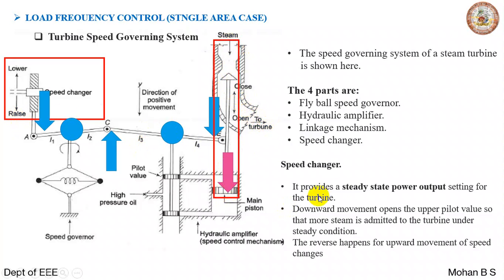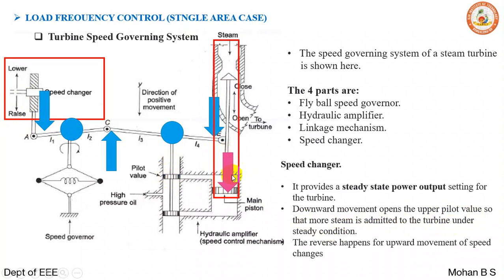The speed changer provides a steady state power output setting for the turbine. Downward movement opens the upper pilot valve so that more steam is admitted to the turbine under steady state. This moves the piston upward and E moves downward due to the high pressure oil entering the chamber. The reverse happens for the upward movement of the speed changer.